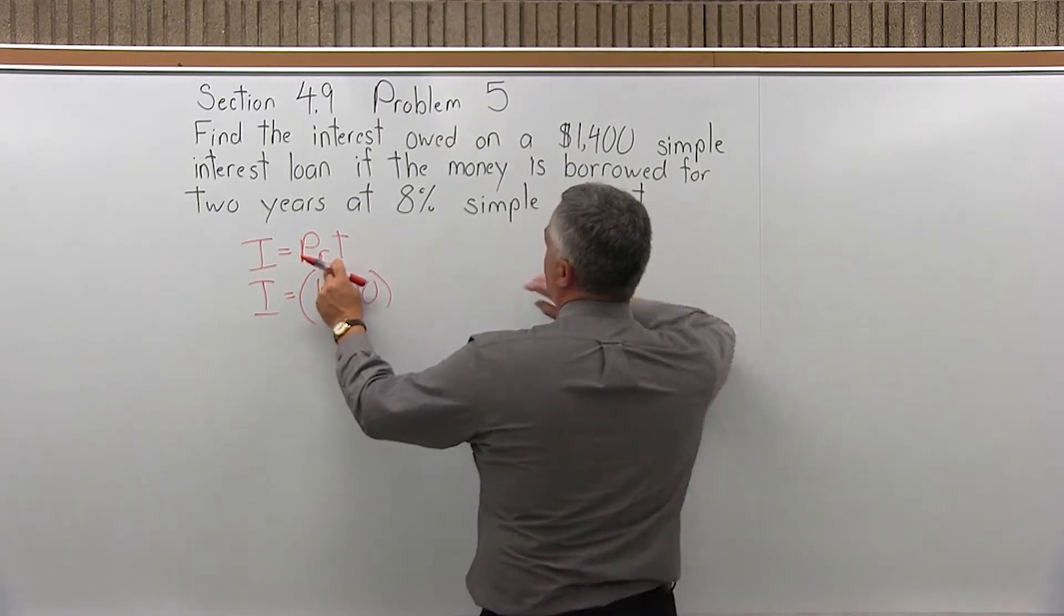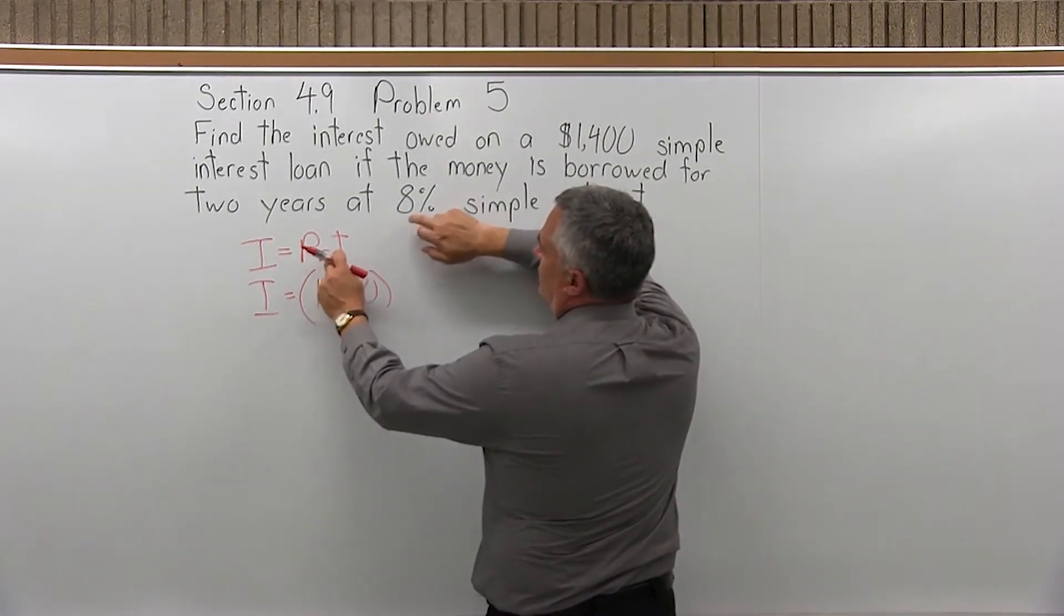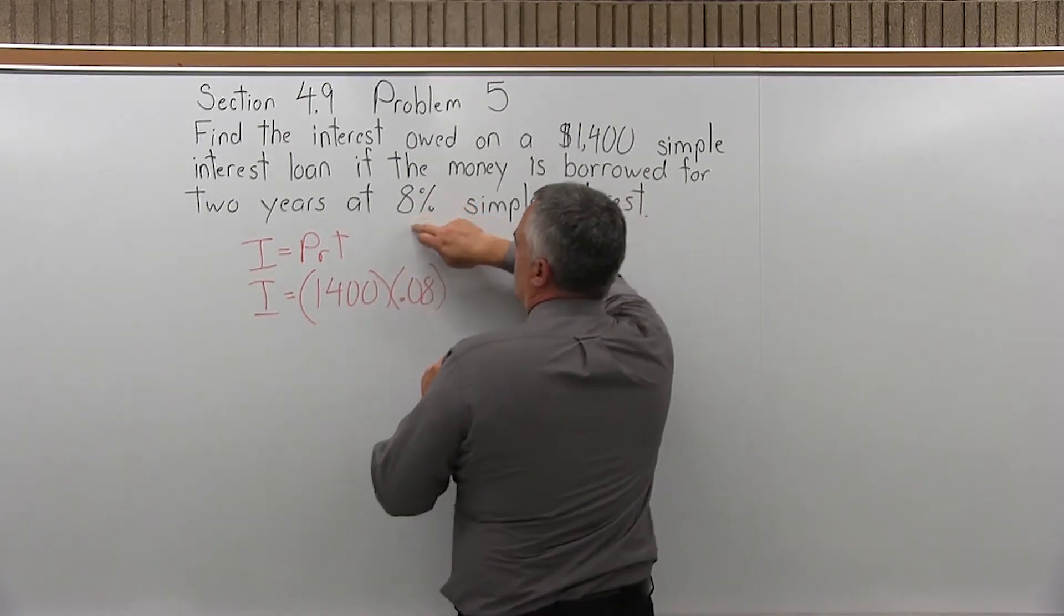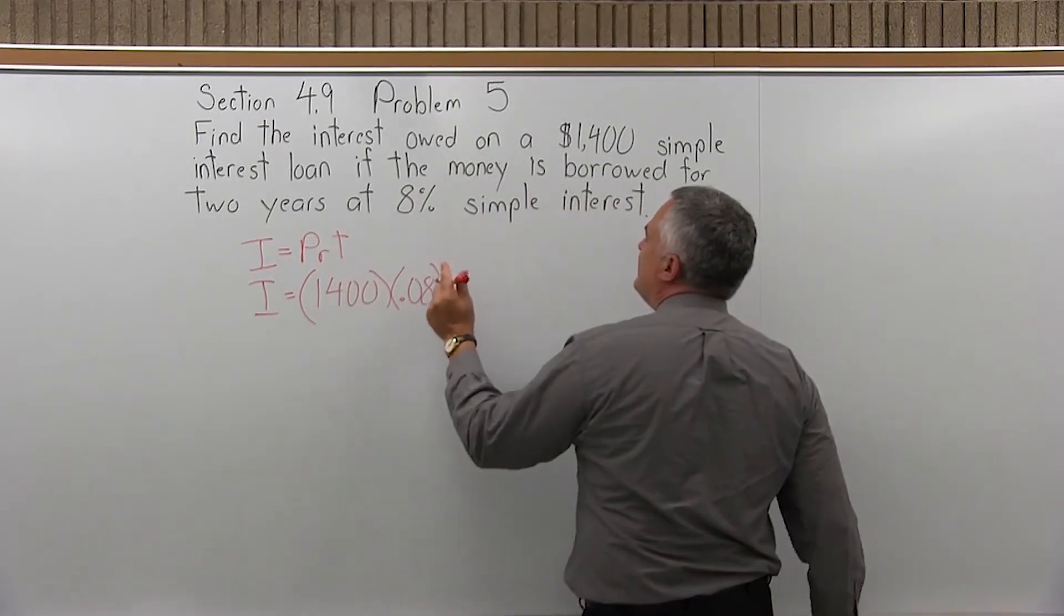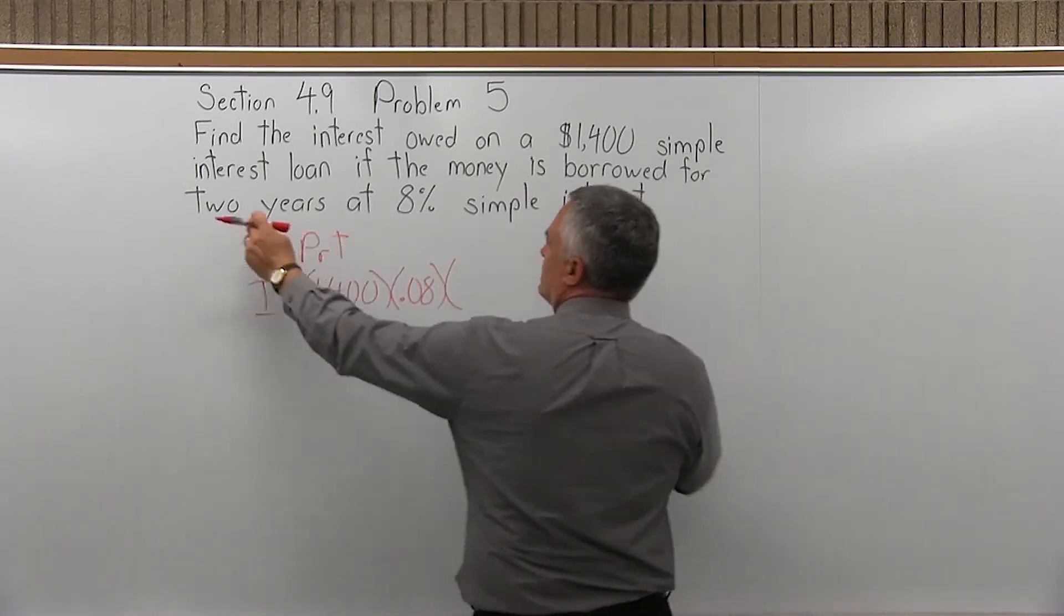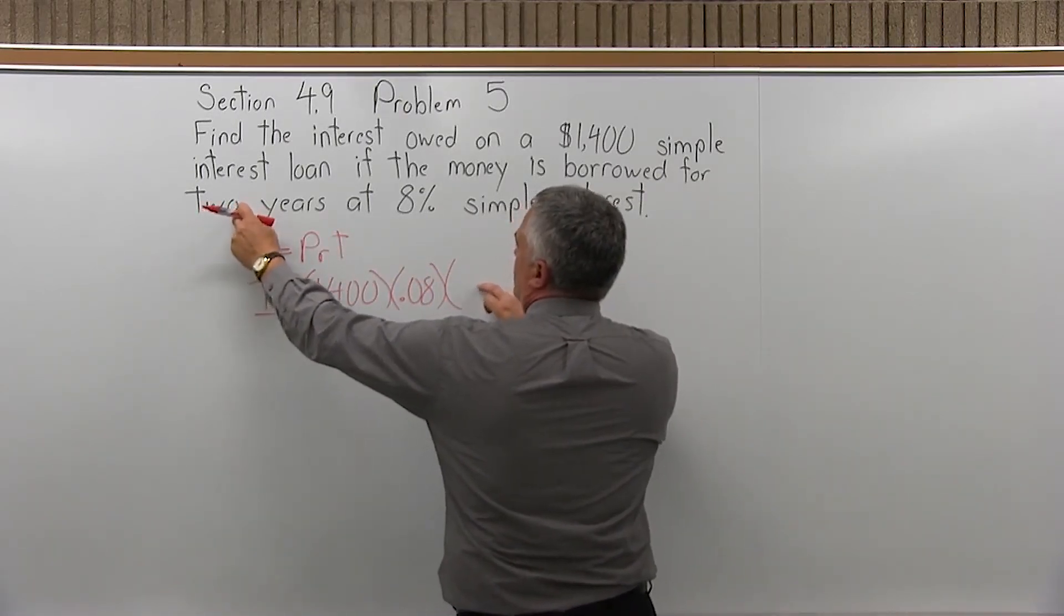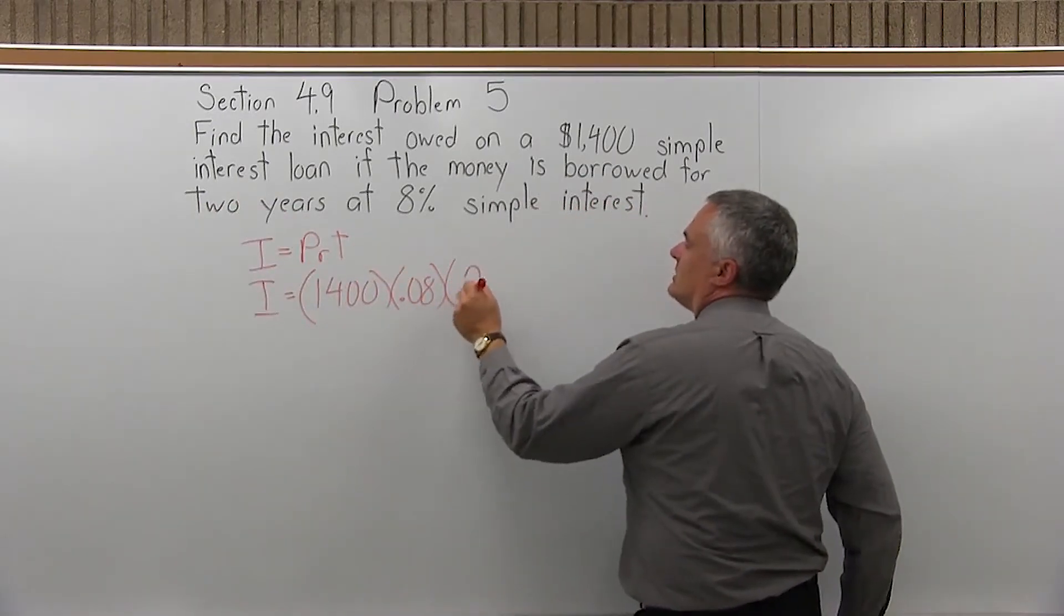R is the rate as a decimal. So our rate is 8%, but as a decimal, that's written 0.08. And then T is time in years. It must be in years. And in this case, it is. If it's in months or any other form, you have to convert it to years. But this one is two, two years, so that's T.